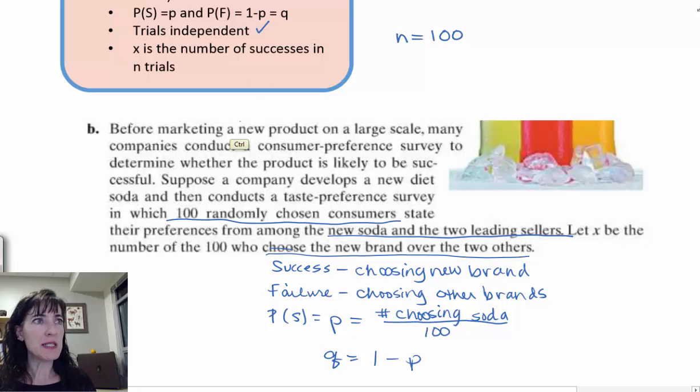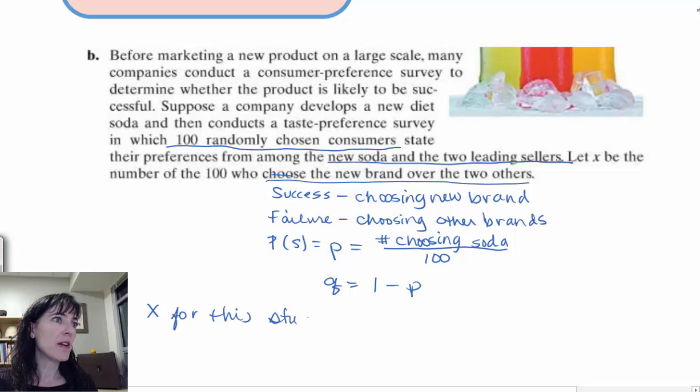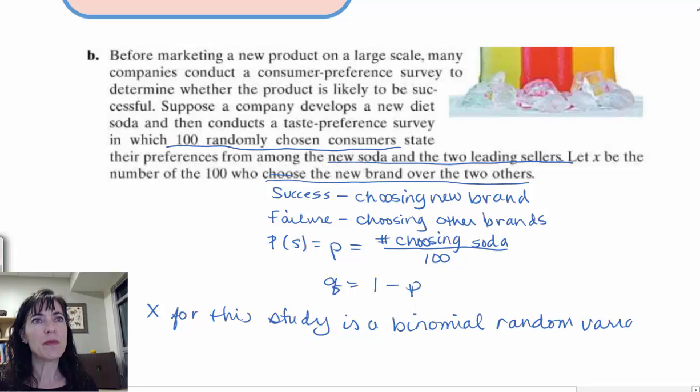And then x is the number of successes in the trials. Let x be the number of the 100 who chose the new brand over the other two. So definitely our x is set up to be the number of successes. So what I'm going to say for this study is that x for this study is a binomial random variable, and we have all the evidence there above—the parts that are set up already for us.